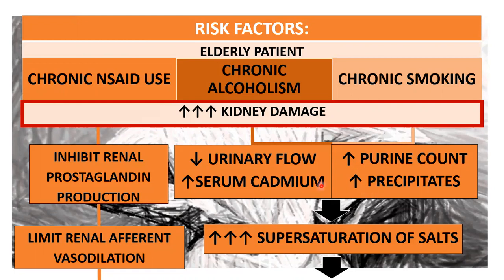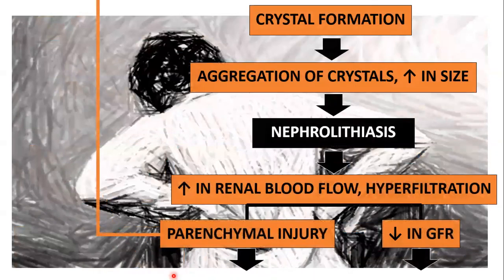This would lead to increased or excessive supersaturation of salts. As for the chronic acid use, the inhibition of prostaglandin production would limit the renal afferent vasodilation. From the excessive salt supersaturation, it would lead to crystal formation.